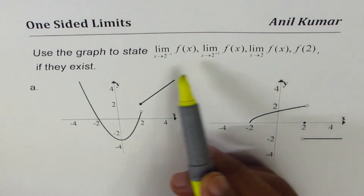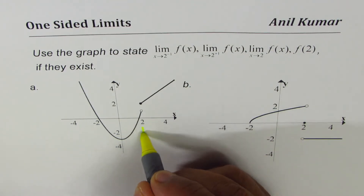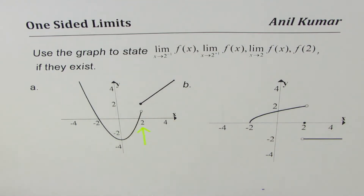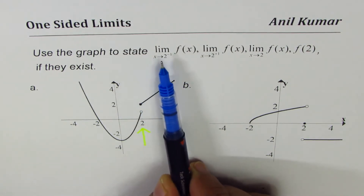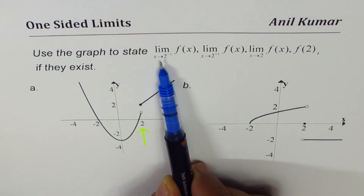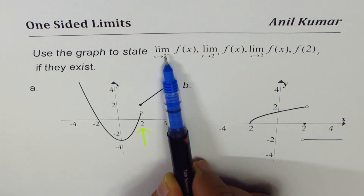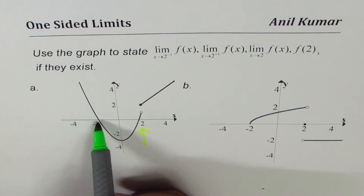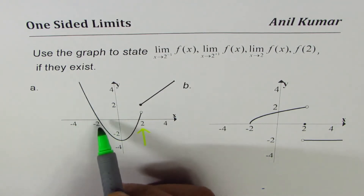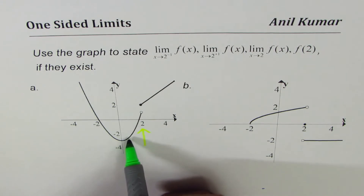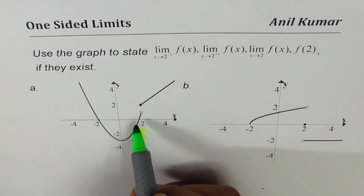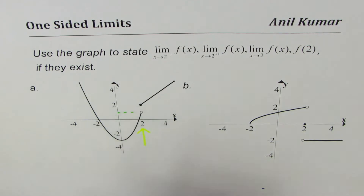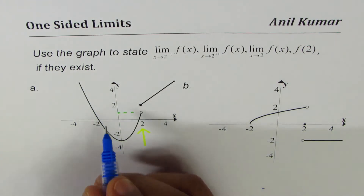Our focus is at x equals 2 — that is the point of focus in our case. Let's read the values from the graph. The first one is the limit as x approaches 2 from the left side. The notation 2 to the minus indicates the left side. If you are approaching from this side, you are going to hit this graph, which is a parabola. As you approach 2, you move along the graph and you approach the value which seems to be 1 from the graph.